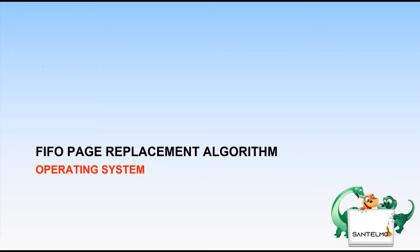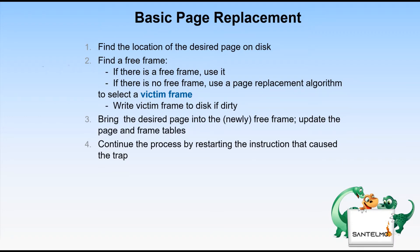Let's start with the basic page replacement algorithm, which applies to first in first out, optimal, and least recently used (LRU). The steps are: first, find the location of the desired page on disk. Next, find a free frame — if there is a free frame, use it. If not, use the page replacement algorithm to select a victim frame, write the victim frame to disk if dirty, bring the desired page into the newly free frame, update the page and frame tables, and restart the instruction that caused the trap.